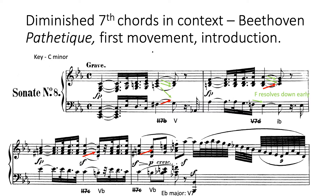It's resolving to chord five — this is clearly chord five in C minor. And we've got an F sharp, an A, a C and an E flat, so that's clearly a diminished seventh. In this case the leading note is this F sharp. If we think of this as a dominant seventh flat nine without the root, the root of this chord would be D. So it's really a kind of two chord — a two seven B to five progression, a really common progression.